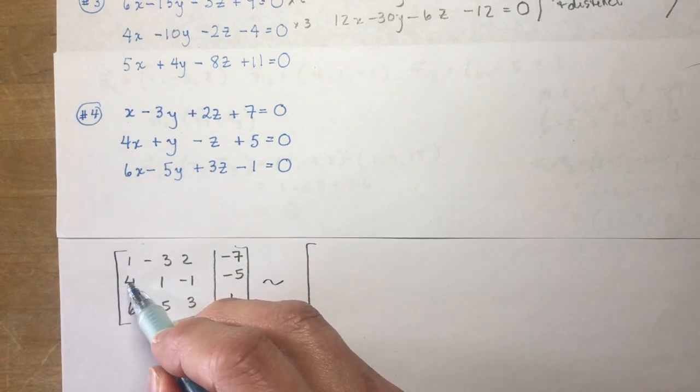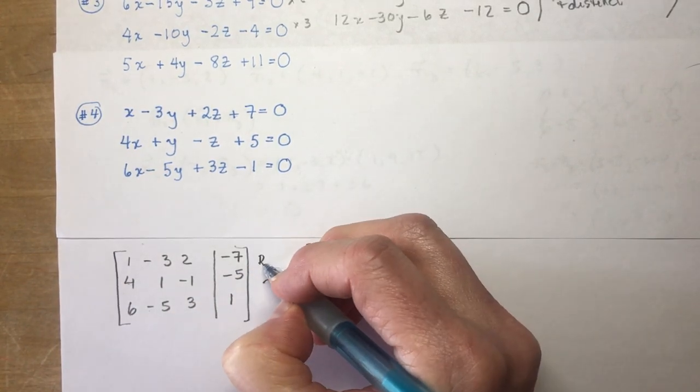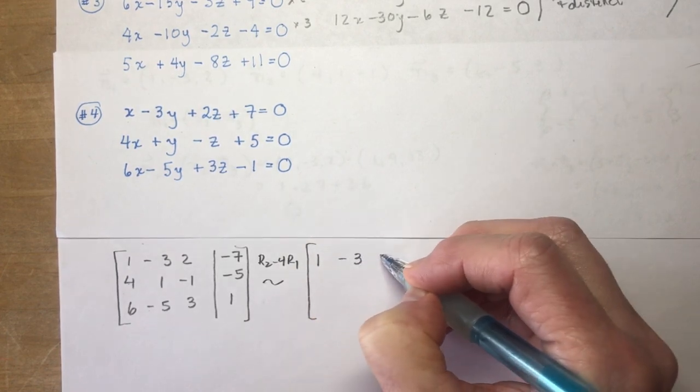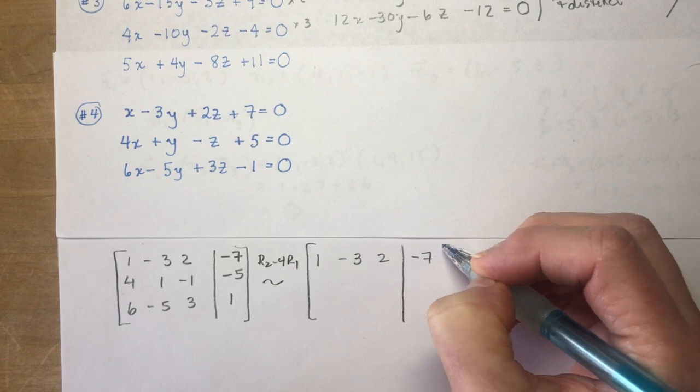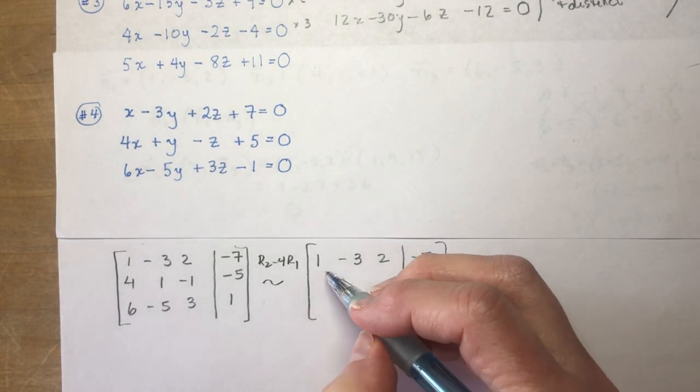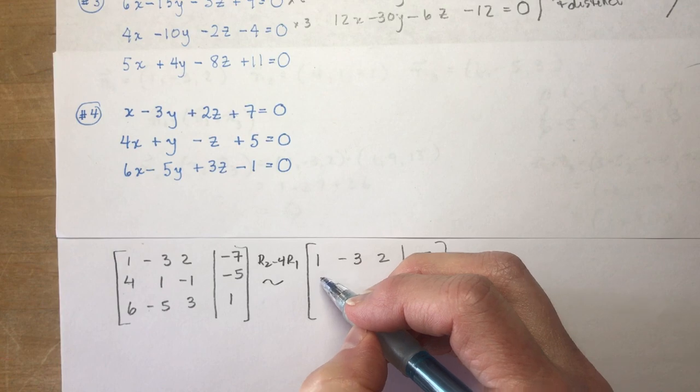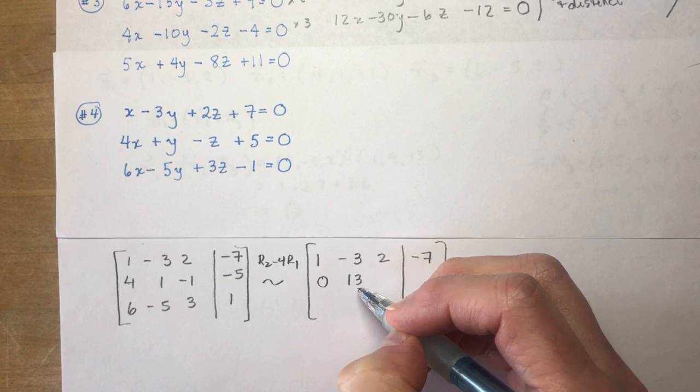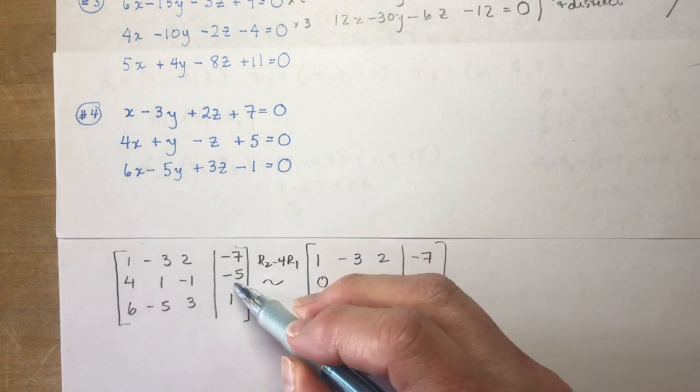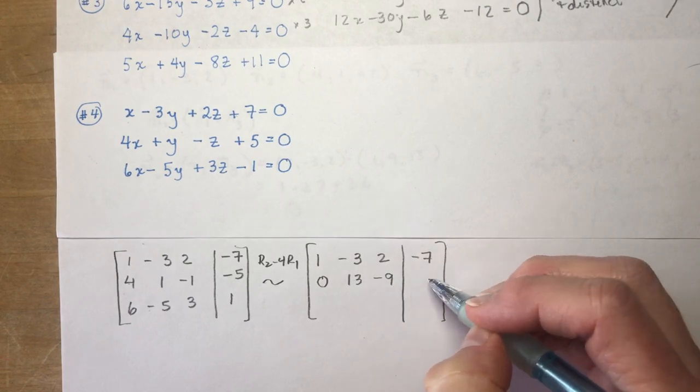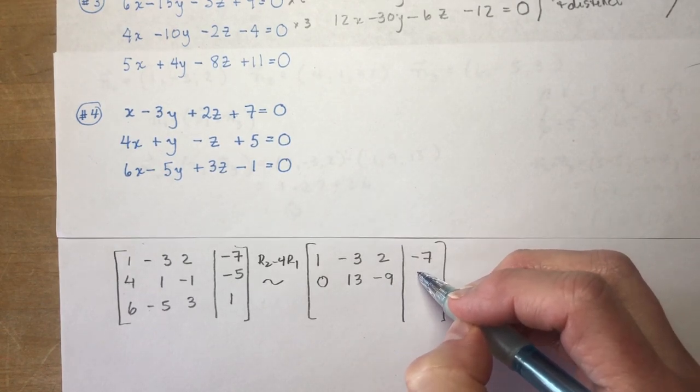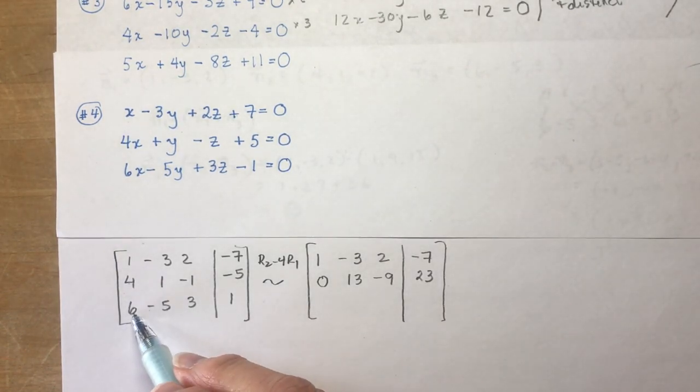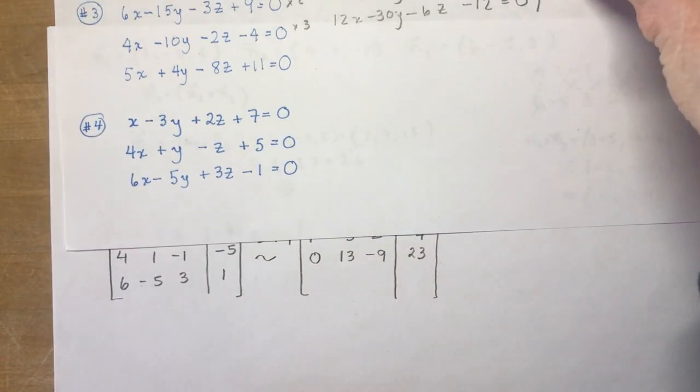And the first thing I'm going to do is I'm going to get a 0 here. So, I'm going to do row 2, minus 4, row 1s. So, let's write out row 1 because we're not going to touch that one. If you want to just stop and try the matrix on your own, it's good practice. So, 4, minus 4 is 0 and 1, plus 12, is going to be 13. And minus 1, minus 8 more, is minus 9. And minus 5, plus 28, is going to be 23. I'm also going to make a 0 here at the same time.